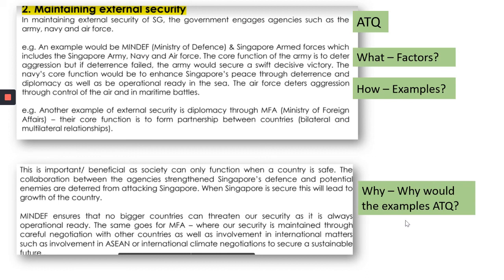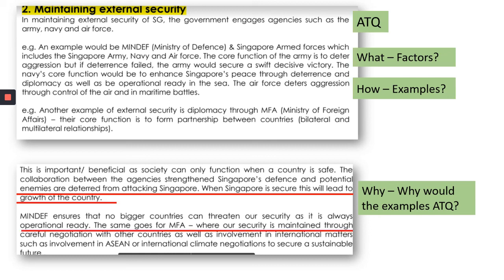Going back to the question — how would these examples answer the question about maintaining security for people living in Singapore? When there is collaboration, it deters potential enemies from attacking Singapore. If you take the example of MFA, it is about careful negotiation to make sure that we are able to have a secure, sustainable future. So I hope this video helped you to unpack a little bit about the 2018 SS N-Level paper.